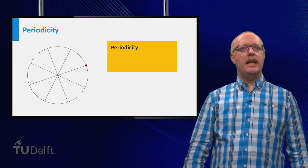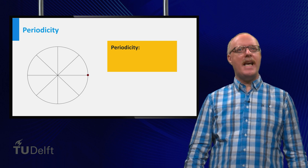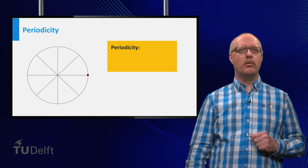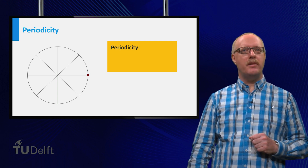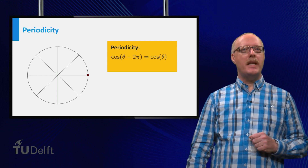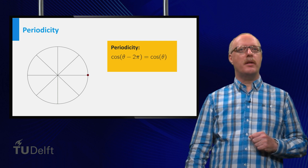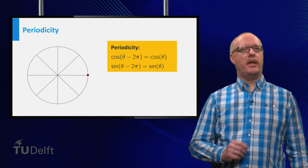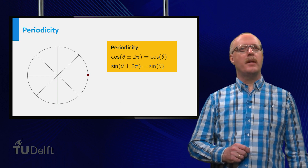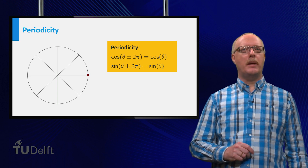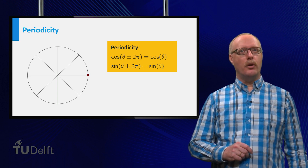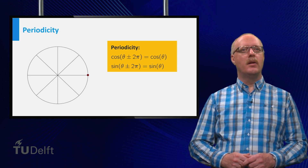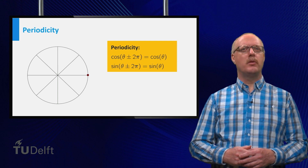Moreover, if we make a complete turn clockwise, which is the negative direction, we also run through the same values of the angle theta again. This implies that the cosine of theta minus 2pi equals the cosine of theta, and that the sine of theta minus 2pi equals the sine of theta. This means the unit circle can be used to find the values of both the cosine and the sine for all values of theta. Both functions are periodic with period 2pi.